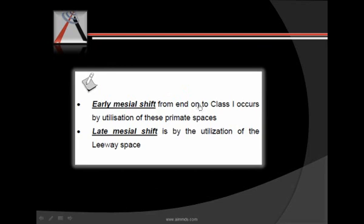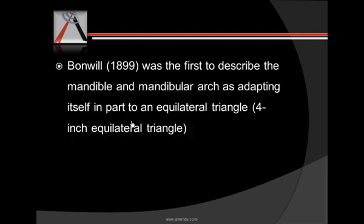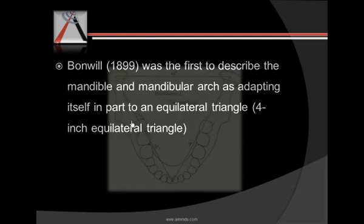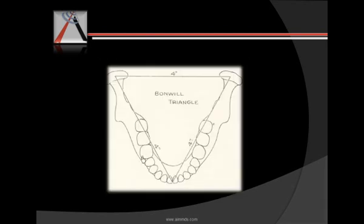Early mesial shift from end-on occlusion to Class I occurs by utilization of primate spaces, and the late mesial shift occurs by utilization of leeway spaces. Various people have tried to give shape to the occlusion. Bonwell was the first to describe the mandible and mandibular arch in an equilateral triangle of four inches — joining the point between the two central incisors to the two condyles. Although Bonwell's concept did not have much application.